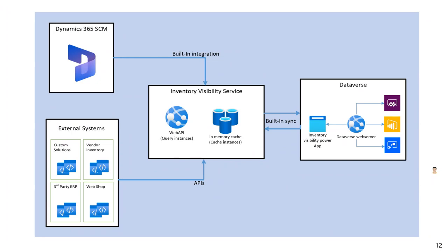At the center, we have the Inventory Visibility Service, which is an HTTP-based microservice where we expose various APIs corresponding to the different features just introduced. You may connect multiple ERP-like systems to Inventory Visibility Service. For example, we provide a built-in integration from Dynamics 365 Supply Chain Management with a batch job where D365 SCM periodically calls the APIs provided by Inventory Visibility Service. Likewise, Inventory Visibility Service can be connected to other systems with inventory information, including third-party ERP systems, vendor solutions with inventory info, webshop systems, etc. Inventory data from different systems are gathered in Inventory Visibility Service to achieve cross-data-source inventory management.